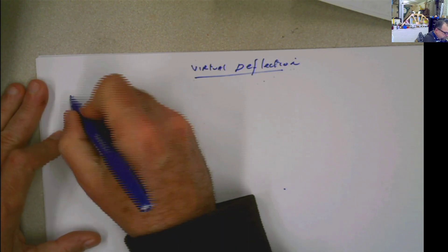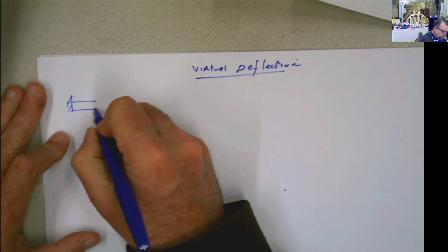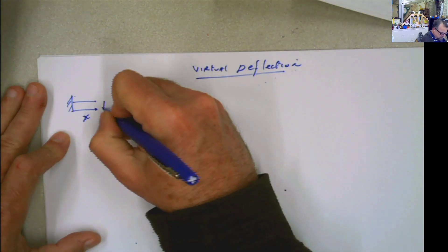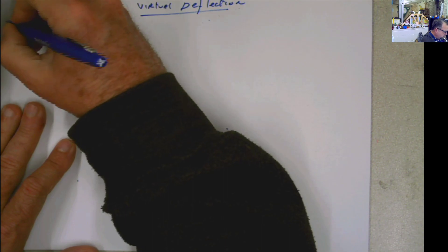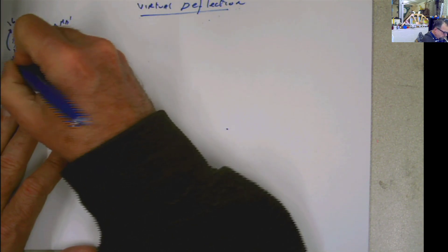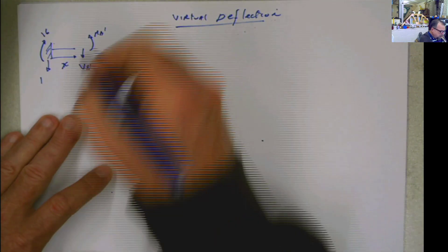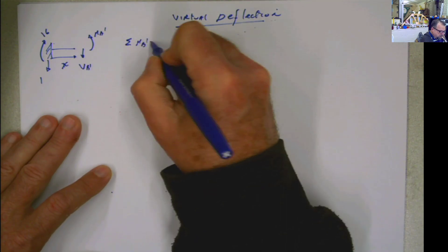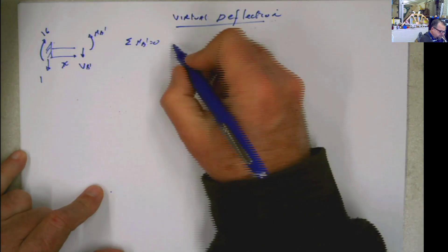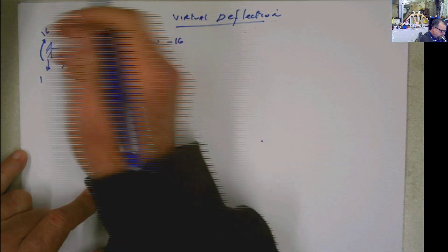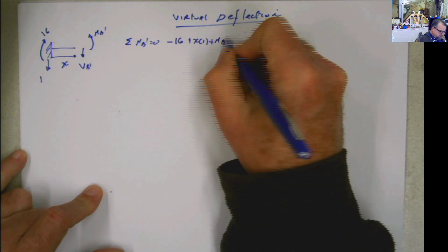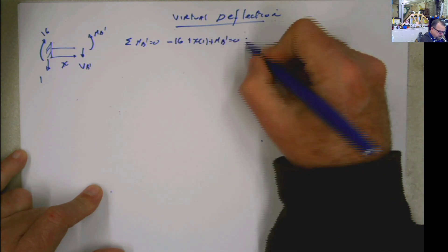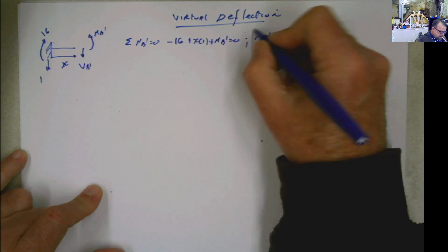Section 1-1 is fairly easy. I put my section 1 here. This distance is going to be x. Remember the convention for the internal forces everywhere. Then we have the reactions that we found in the virtual structure. We have to calculate the summation of moments at b-prime equals 0. If you do moment here, you're going to have negative 16 plus x times 1 plus nb-prime equals 0. Solving for nb-prime: nb-prime equals 16 minus x. Section 1-1, limit from 0 to 16.